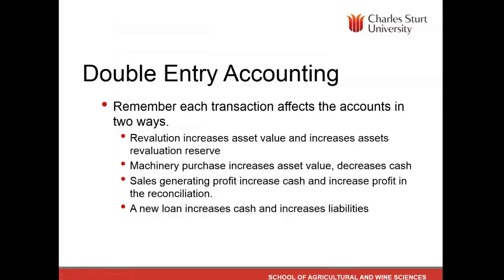What we're doing is making two entries for every transaction. More often than not, when we can't get a balance between our net asset figure and our reconciled owner's equity, one or more transactions have been incorrectly allocated — we've allocated perhaps one side and not the other. Each transaction affects the accounts in two ways: a revaluation increases the asset value and increases the asset revaluation reserve; a machinery purchase increases the asset in the depreciation schedule and decreases cash at bank; sales that generate profit increase cash at bank and increase profit in the reconciliation; and a new loan increases cash but also increases liabilities.